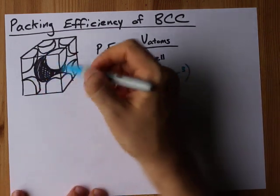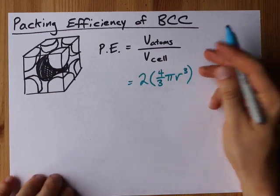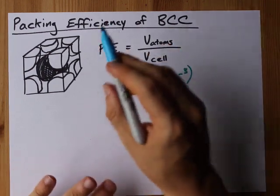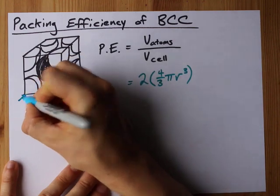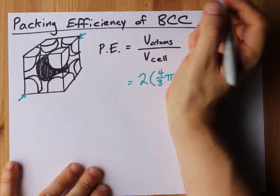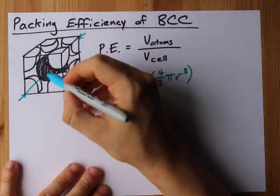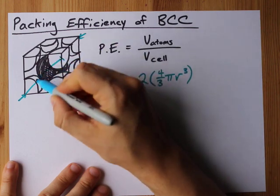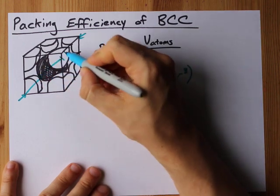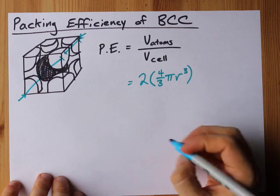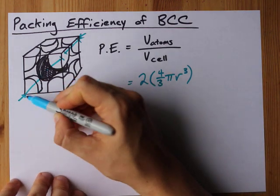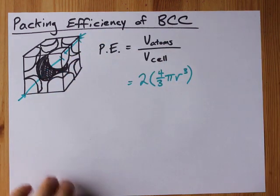The volume of the cell is going to be a little more complicated to derive but it won't be too bad. All I need you to see is that to get from one corner to the opposite corner of the cube, you have one radius, two radii for the body in the center, plus one extra radius. That means it's four r's, four radii to get from one corner to the opposite corner.